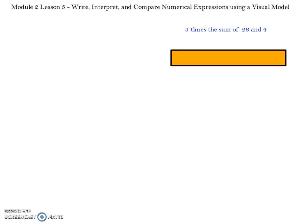Module 2, Lesson 3. We're going to write, interpret, and compare numerical expressions using a visual model. The visual model that we're using today is the tape diagram, which is a rectangular box that you'll be breaking into sections, and each section will have a different value.